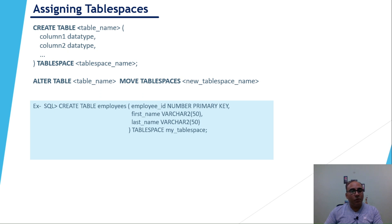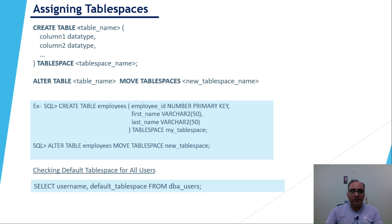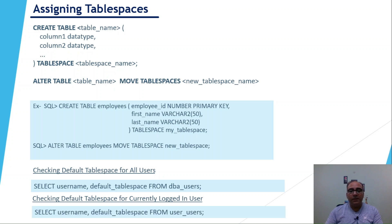Here we are creating an employee table using tablespace my_tablespace, and then assigning a new tablespace to the existing employees table using the MOVE TABLESPACE keyword. To verify the default tablespace, if you have DBA access, query DBA_USERS to get default tablespaces for all usernames. For the currently logged-in user, query USER_USERS to verify the default tablespace.